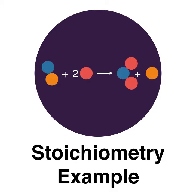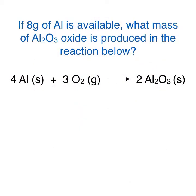In this lesson, we'll go through an example of a stoichiometry calculation. Let's take a look at our problem. If 8 grams of aluminum is available, what mass of aluminum oxide is produced in the reaction below?